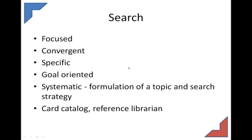I'd like to talk a little bit about search. Most of you know what it means when you search for a resource. For example, you might be writing a term paper. You probably already have a subject in mind and you're looking for specific things — specific facts, notions, ideas. Your search is going to be focused, narrow, convergent, and specific. It's goal-oriented and systematic. You formulate a topic and then you build a search strategy. The way you would search in a library typically would be a card catalog, or you could ask a reference librarian.